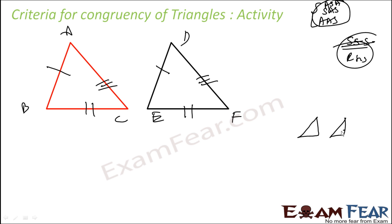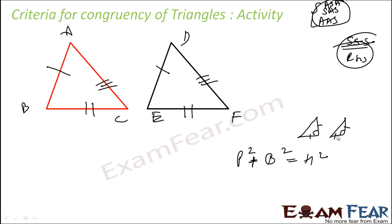In case of a right triangle, it is a little different. In a right triangle, even if two sides are equal, the third side has to be equal. Why? Because we have the Pythagorean formula: P² + B² = H². So if any two corresponding sides are equal, the third corresponding side has to be equal.